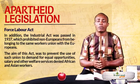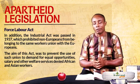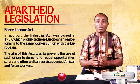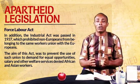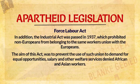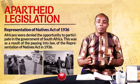In addition, the Industrial Act was also passed into law in the year 1937. By this act, Africans and Europeans were not expected to belong to the same workers' union. This act was aimed at preventing the use of such unions to demand for increases in salary and other welfare services by Africans.